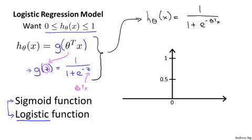Let me show you what the sigmoid function looks like. I'm going to plot it on this figure here. The sigmoid function g of z, also called the logistic function, looks like this: it starts off near zero, then it rises until it crosses 0.5 at the origin, and then it flattens out again.